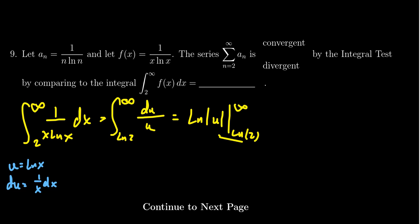If I plug in the natural log of 2, there's no problem there. You're just going to get the log log 2. The problem is when you plug in infinity. You're going to take the natural log of infinity, for which the natural log of infinity is itself infinite.